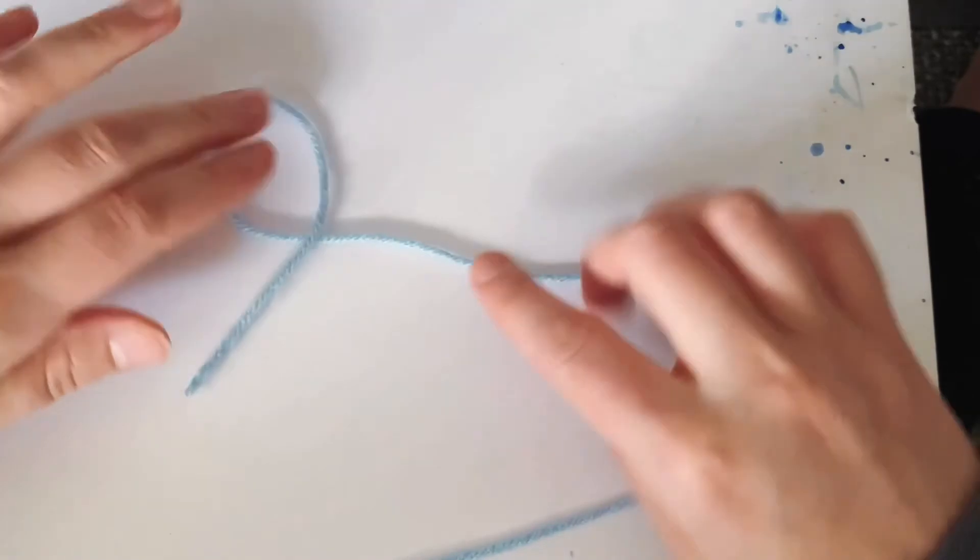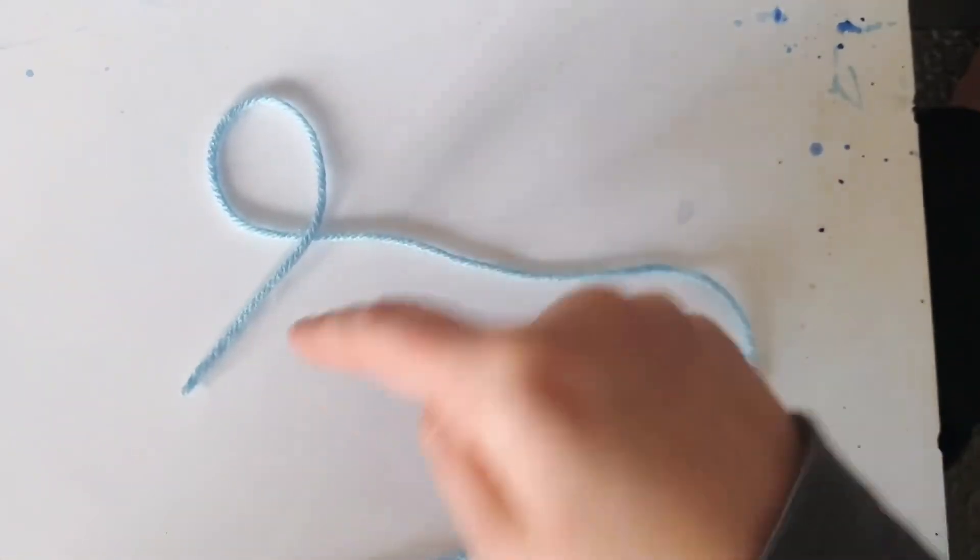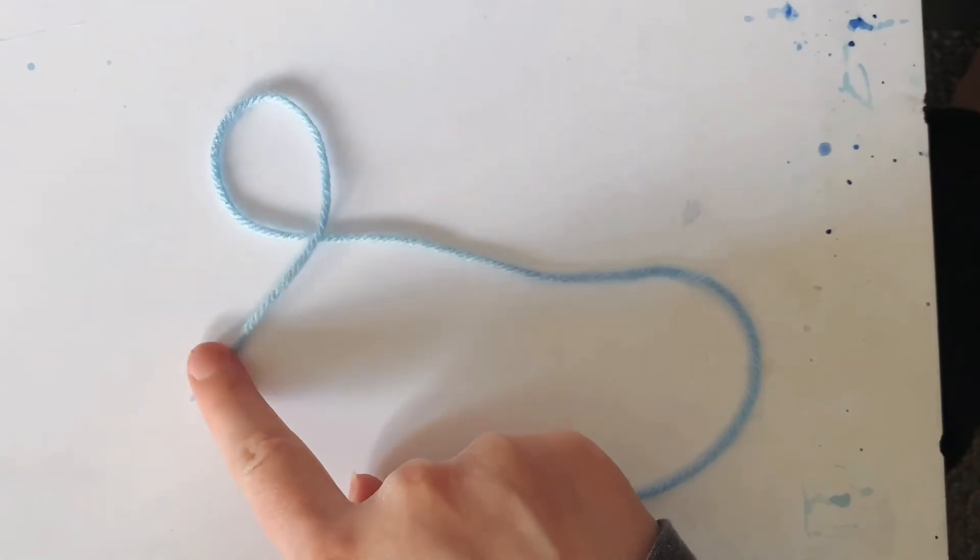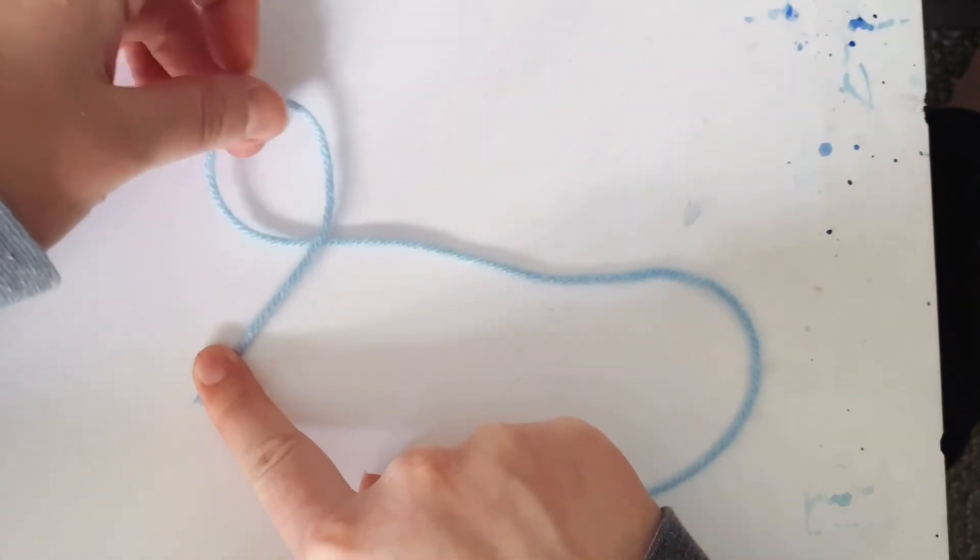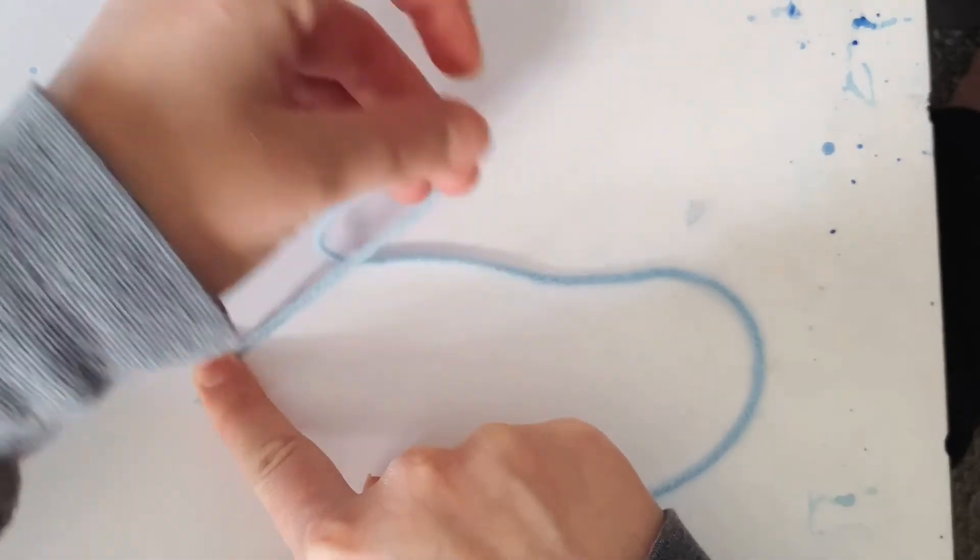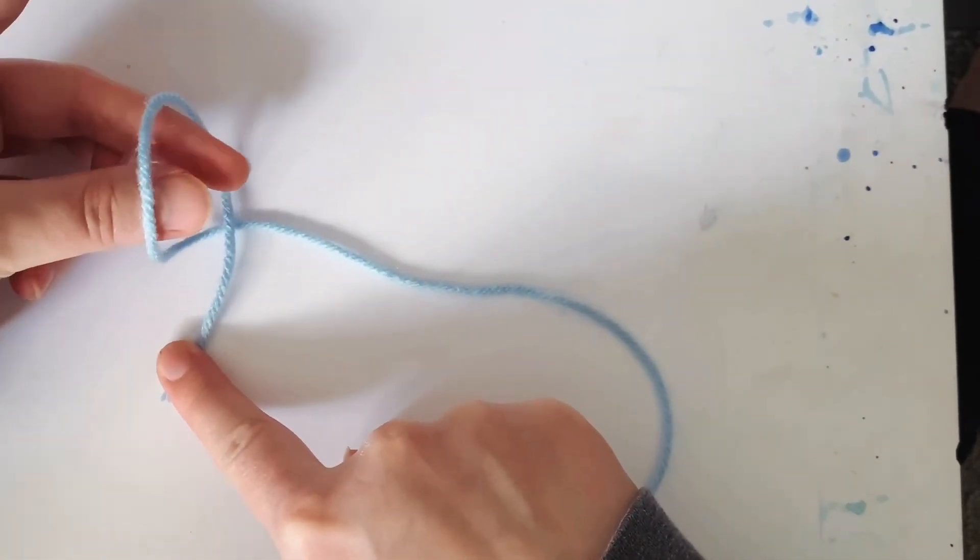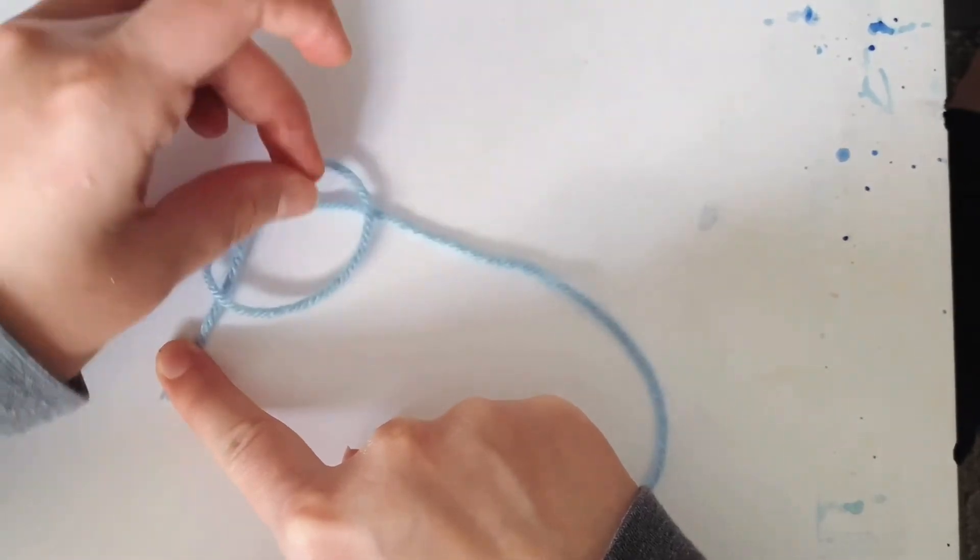You're going to loop it over, so notice my left end is coming out that way and it's on top of the other end. I'm going to hold the tail with my right hand. With my left hand, I'm going to use two fingers and flip it over.